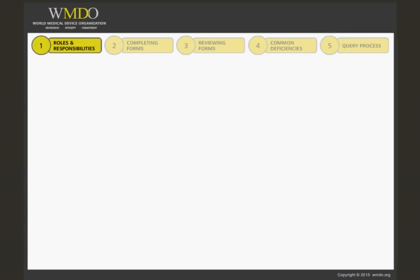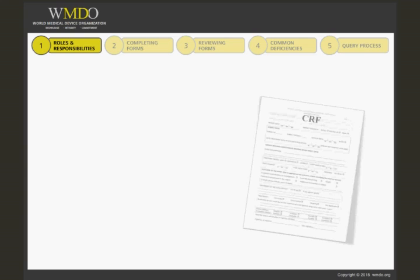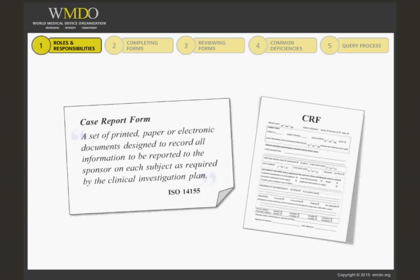Before we go into the roles and responsibilities, let's review what we mean by case report form. According to ISO 14155, a case report form, or CRF, is defined as a set of printed, paper, or electronic documents designed to record all information necessary about a subject that has been enrolled in the clinical investigation. What information is to be recorded is dictated by the requirements of the clinical investigation plan.